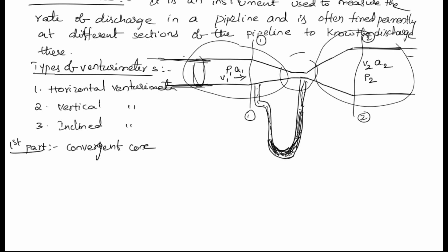As the area goes on decreasing, the velocity goes on increasing, and as velocity increases, pressure goes on decreasing. Throughout the convergent cone, as the fluid transfers from the convergent cone to the next part, the pressure goes on decreasing and velocity goes on increasing. The pressure energy present in the convergent cone is gradually changing to kinetic energy.